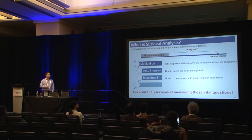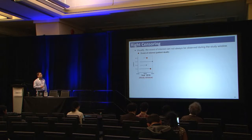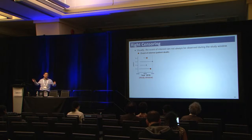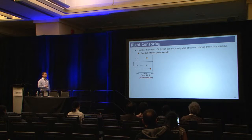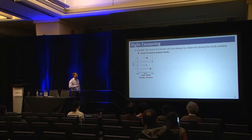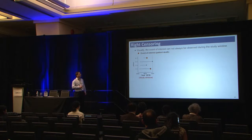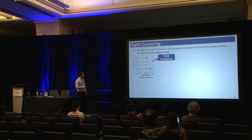Survival analysis aims at answering all those vital questions. But as a limitation of the study window, you cannot extend it to infinity, so there will usually be many events of interest that are not observed during the observation window. For example, with four patients: in patients one and four, the event of interest has been observed, but for patients two and three, it has not. For patient three, this is because of time limitation — our study window is the year 2016, and at the last day of 2016, the event had not been observed.